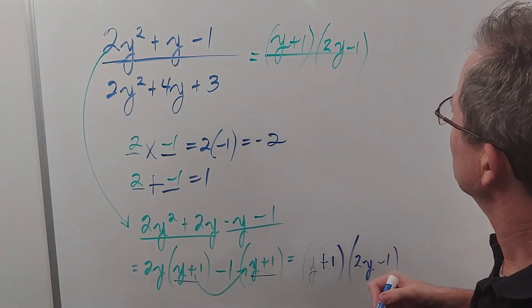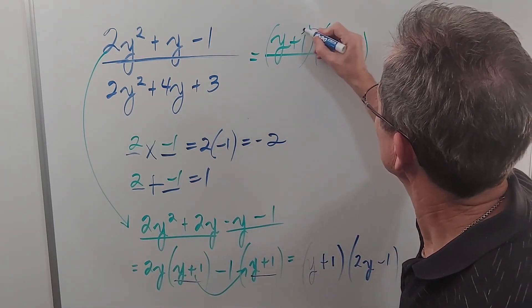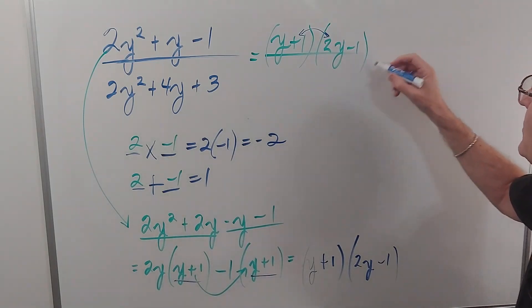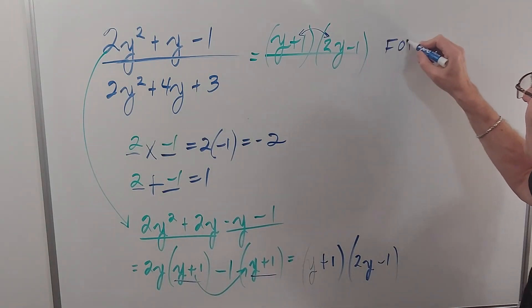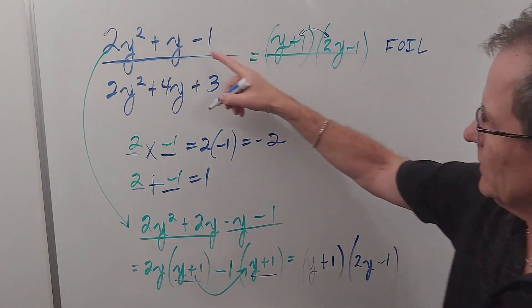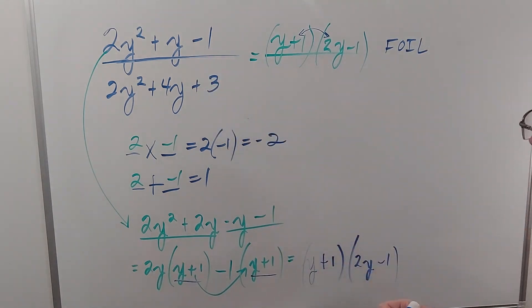Of course, as we've said before, you can change the order of these two. And if you want to check to make sure that's right, you can multiply it out using FOIL, and you'll get this. But you don't need to do that. You can just check the back of the book.